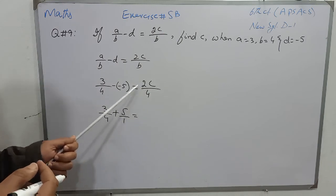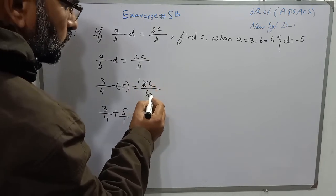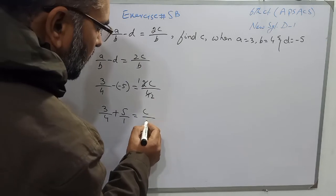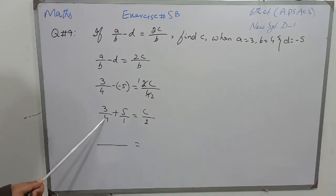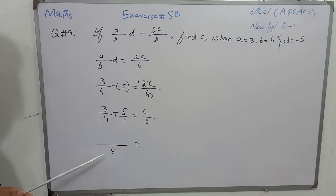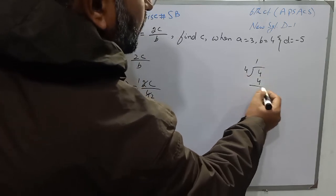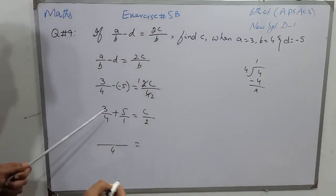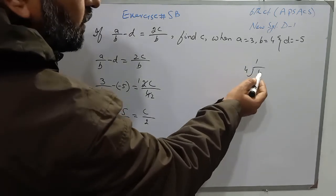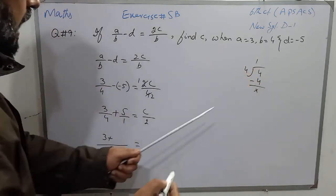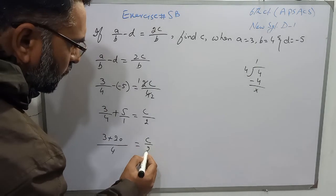On the right side, 2 and 4 are in fraction form — 2 and 4 can be cancelled: 2 goes into 2 once, and 2 goes into 4 twice — so it simplifies to C over 2. Now take the LCM of denominators 4 and 1 on the left side — LCM is 4. Dividing 4 by 4 gives quotient 1, multiplied by 3 gives 3. Dividing 4 by 1 gives quotient 4, multiplied by 5 gives 20. So we have 3 plus 20 over 4 is equal to C over 2.